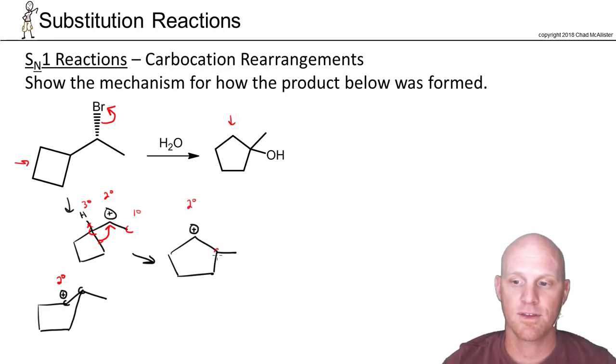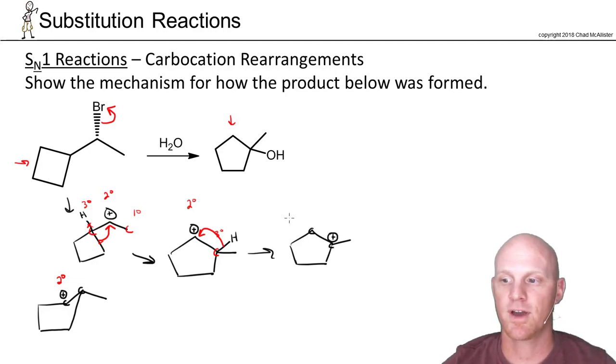We have a secondary carbocation, and the adjacent carbon is tertiary. So we'll do one more rearrangement—a hydride shift. The hydrogen reattaches to the carbocation. This carbon now has four bonds, no longer a carbocation. But the carbon that gave the hydrogen away now only has three bonds—it's our new carbocation. Now this is done rearranging.